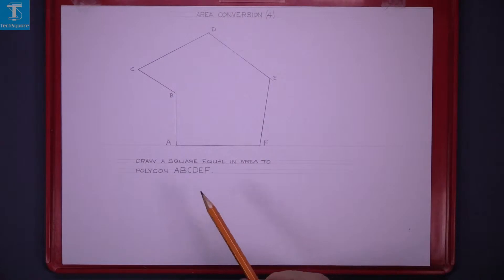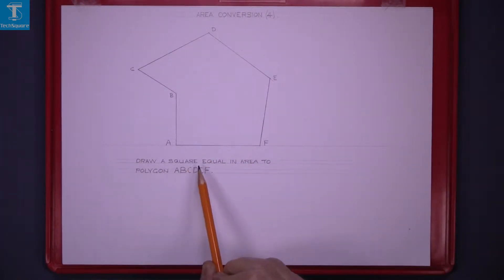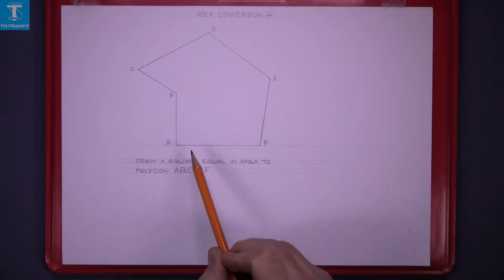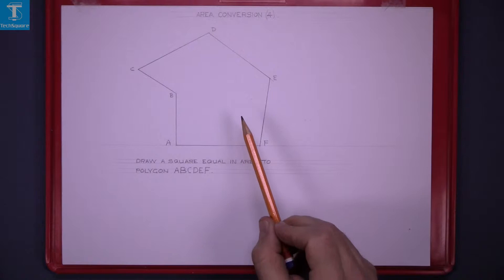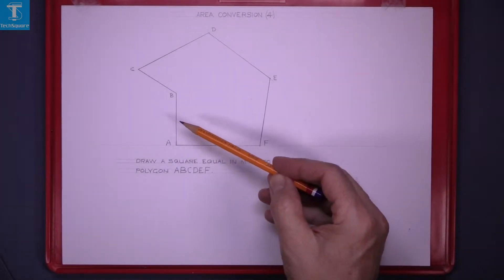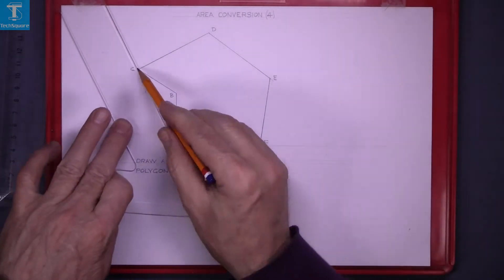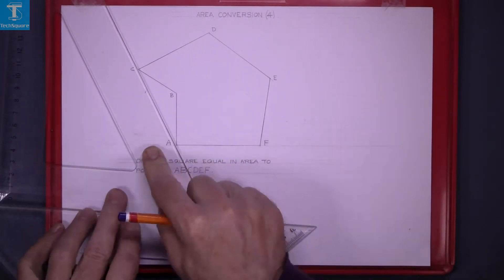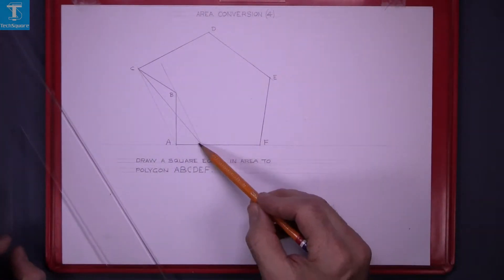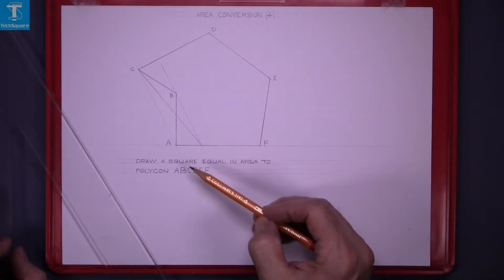Area conversion: given the figure, you're asked to draw a square equal in area to polygon ABCDEF. We're given the polygon and asked to draw a square equaling its area. First, we convert it to a triangle by taking off one corner at a time. Joining A to C and drawing a parallel through B, we now have a five-sided figure equal in area to the original six-sided figure.